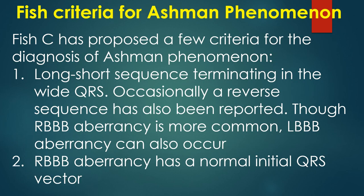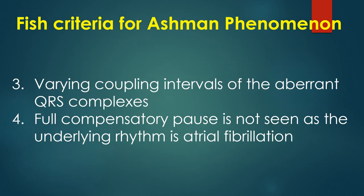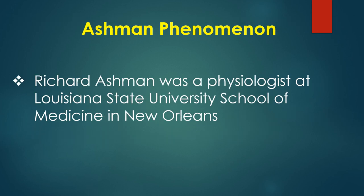Fish proposed criteria for the diagnosis of Ashman phenomenon: (1) Long-short sequence terminating in the wide QRS — occasionally a reverse sequence has also been reported; (2) RBBB aberrancy with a normal initial QRS vector — though LBBB aberrancy can also occur; (3) Varying coupling intervals of the aberrant QRS complexes; (4) Full compensatory pause is not seen as the underlying rhythm is atrial fibrillation. Richard Ashman was a physiologist at Louisiana State University School of Medicine in New Orleans.